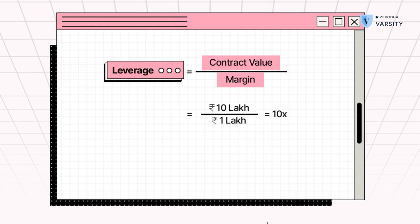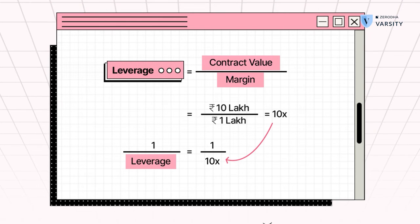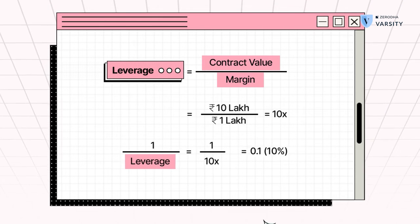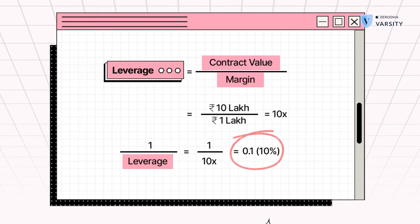Once you have leverage equals contract value divided by margin, in this case it was 10x, all you need to do is divide 1 divided by leverage. So 1 divided by 10 will give you 10%. This means a 10% movement against your position will wipe off your entire initial margin. So as you can see a 10x leverage can have a huge impact on your initial margin.